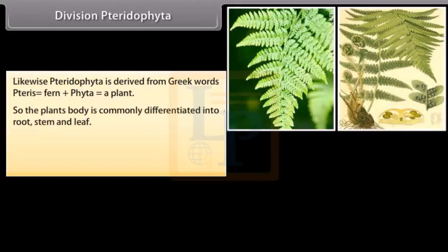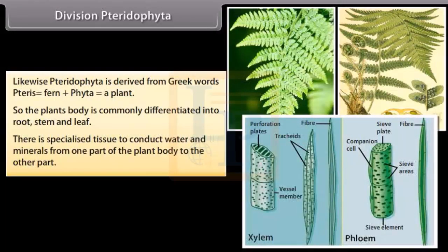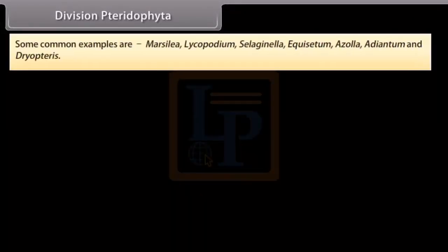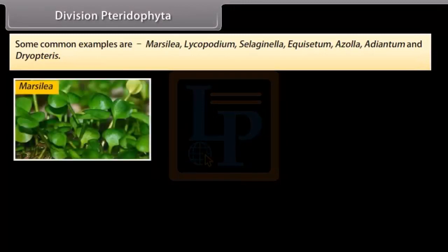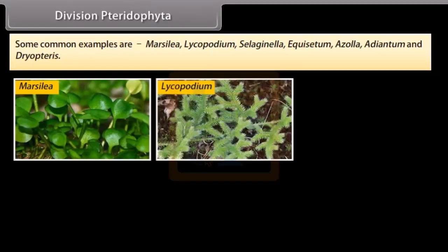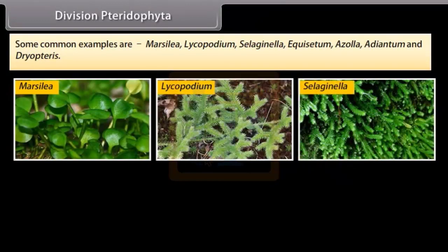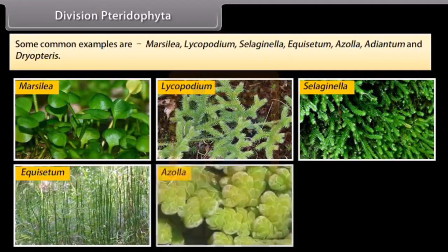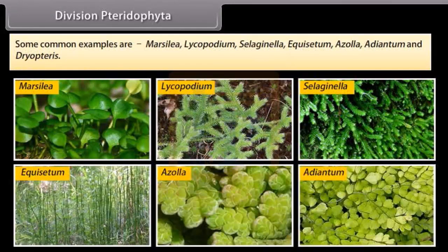In Division Pteridophyta, the plant body is commonly differentiated into root, stem and leaf. There is specialized tissue to conduct water and minerals from one part of the plant body to another. Common examples are Marsilia, Lycopodium, Selaginella, Equisetum, Azolla, Adiantum, and Dryopteris.